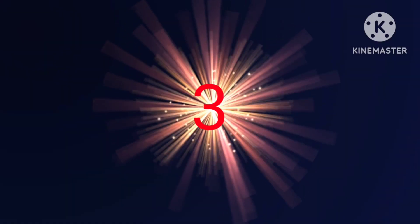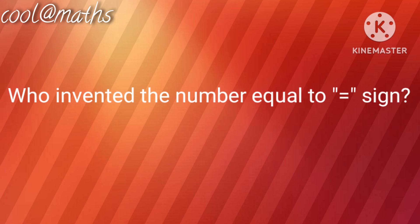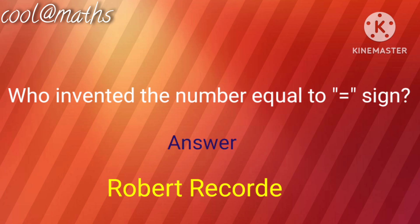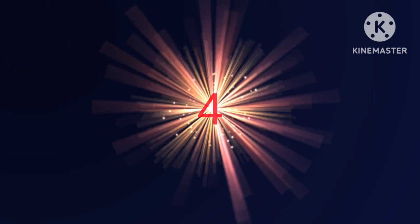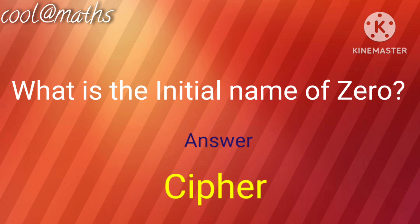Question number 3. Who invented the equals to sign? Answer: Robert Recorde. Question number 4. What is the initial name for zero? Answer: Cypher.